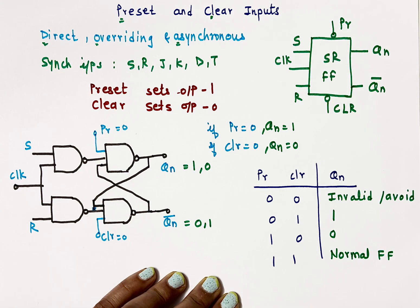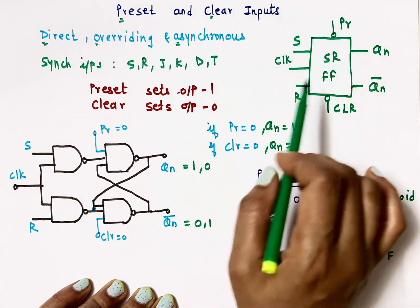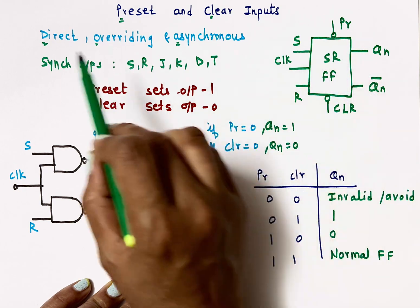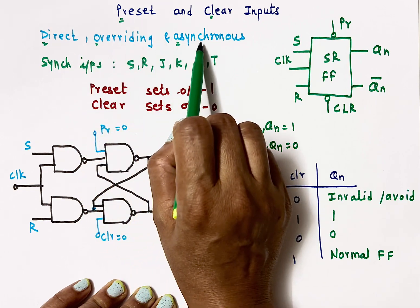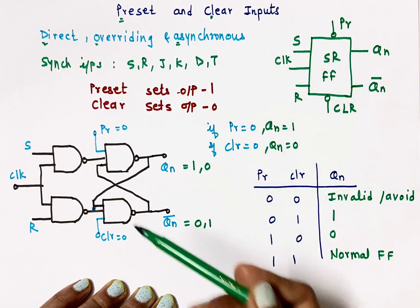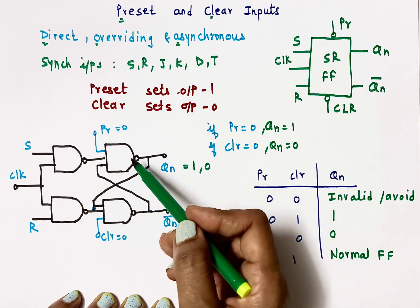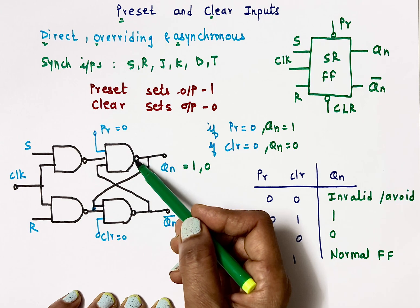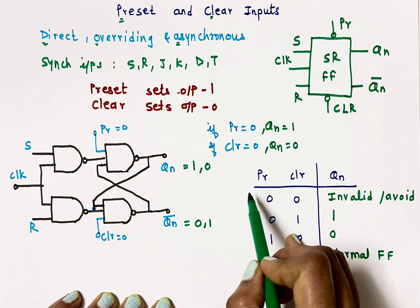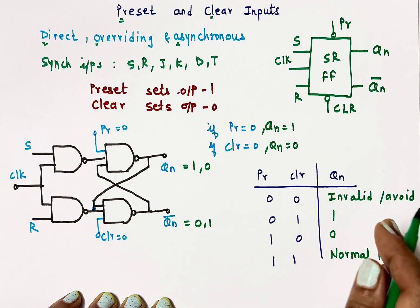To write a short note on preset and clear inputs, you need to draw the block diagram showing preset and clear, explain that they are direct, overriding, and asynchronous inputs, and list the synchronous inputs as S, R, J, K, D, and T. Show how preset and clear are connected to the NAND gates, and remember: when any input of a NAND gate is 0, the output becomes 1. The job of preset is to make the output 1, and the job of clear is to make the output 0.